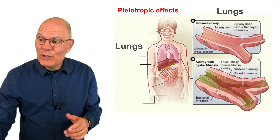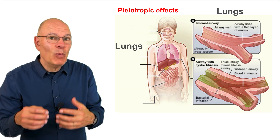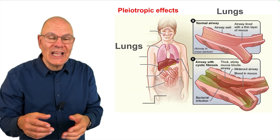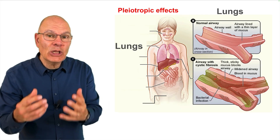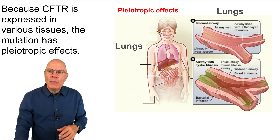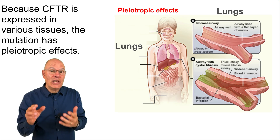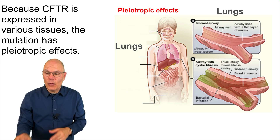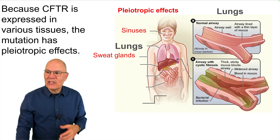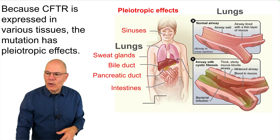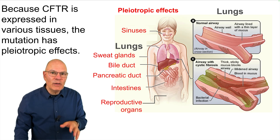That thickened mucus winds up trapping bacteria, causing infection that leads to inflammation, tissue damage, and ultimately lung damage. But because CFTR is expressed in various tissues, the mutation has pleiotropic effects — not just in the lungs, but also in the sinuses, the sweat glands, the bile duct, the pancreatic duct, the intestines, and the reproductive organs.